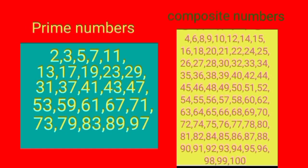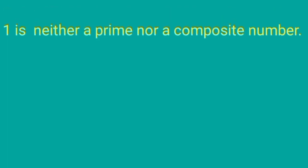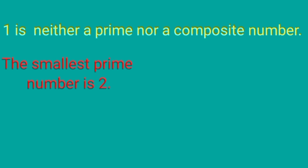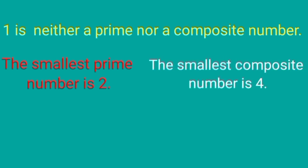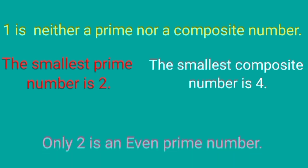In this way, we have learned about prime numbers and composite numbers between 1 to 100. We have also learned some important facts: 1 is neither a prime number nor a composite number; the smallest prime number is 2 and the smallest composite number is 4; and only 2 is an even prime number.